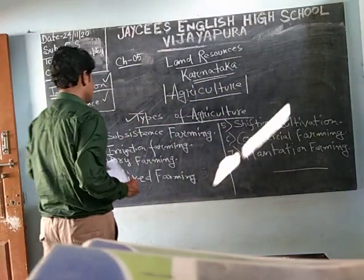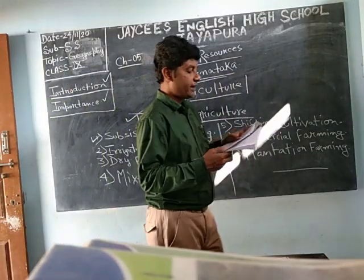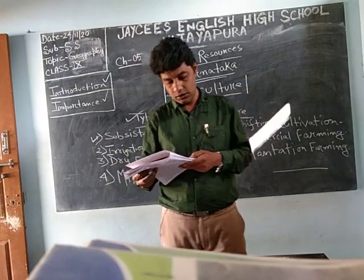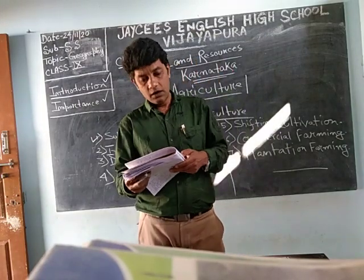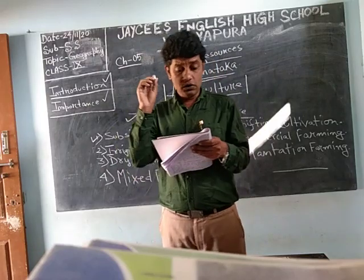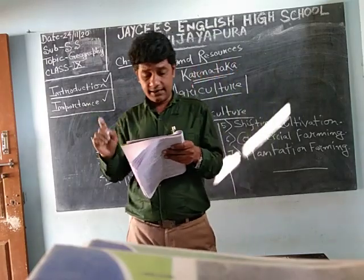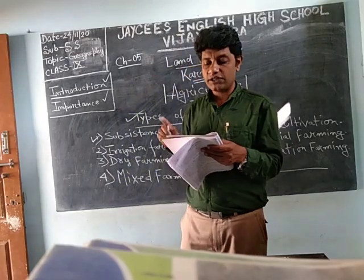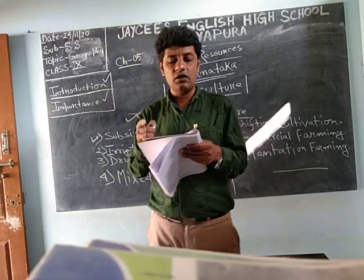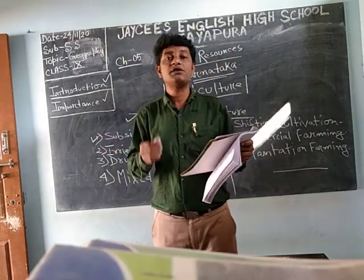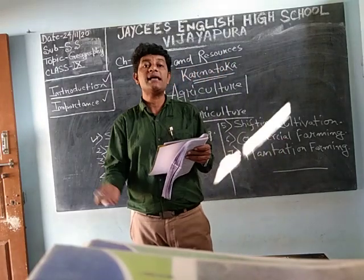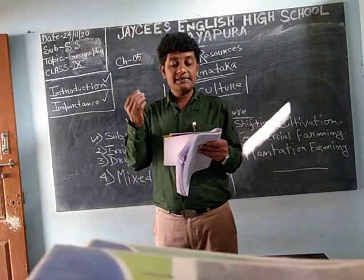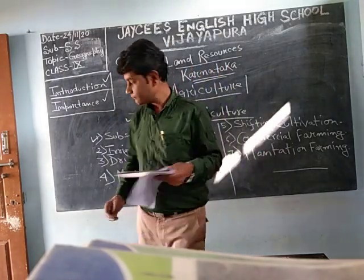First, let us look at irrigation farming. Crops grown by using water from canals, tanks, or wells is called irrigation farming. The crops grown with the help of irrigation facilities are known as irrigation farming. Examples are paddy, sugarcane, etc.